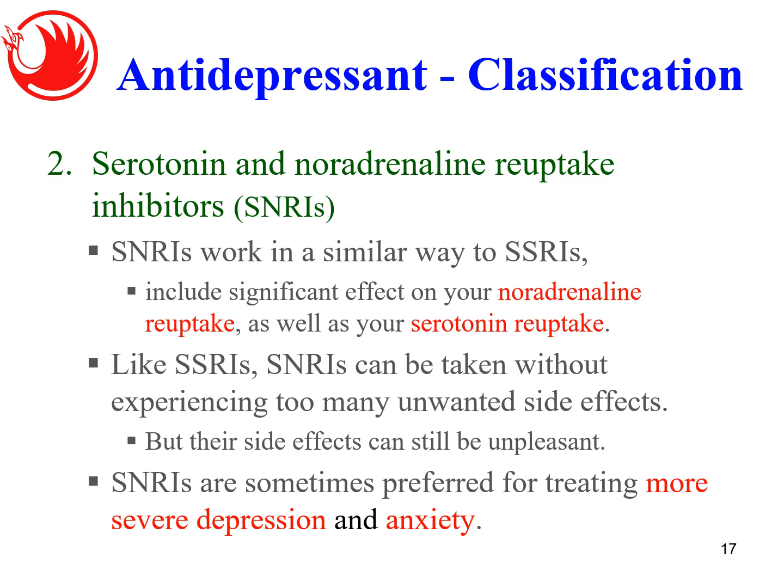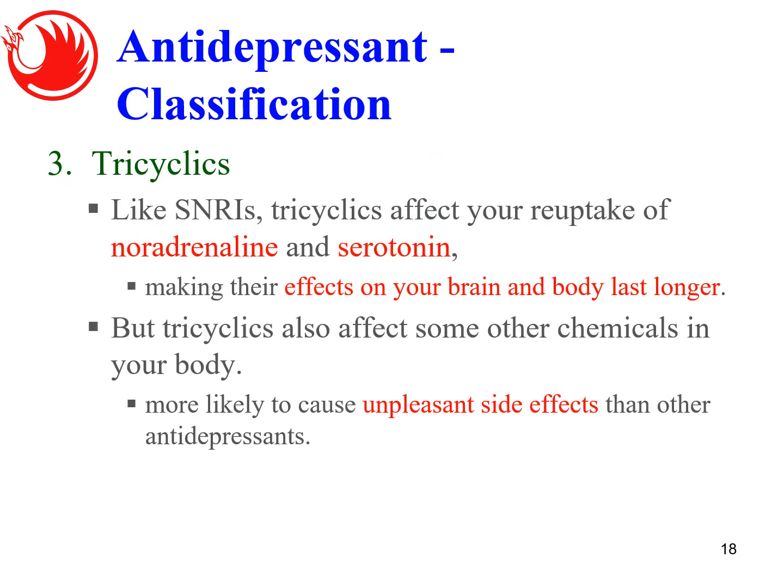The next class is SNRIs — serotonin and noradrenaline reuptake inhibitors. While SSRIs only affect the reuptake of serotonin, SNRIs affect the reuptake of both happy hormones: noradrenaline and serotonin. This class is applied for more severe kinds of depression. The third class is tricyclics, which is similar to SNRIs in that it also works to affect the reuptake of both hormones, keeping them in the brain and body longer. This class of drug has more side effects compared to classes one and two.